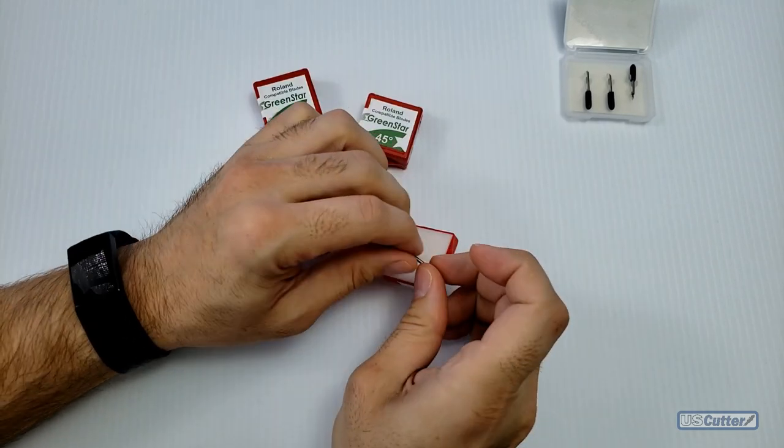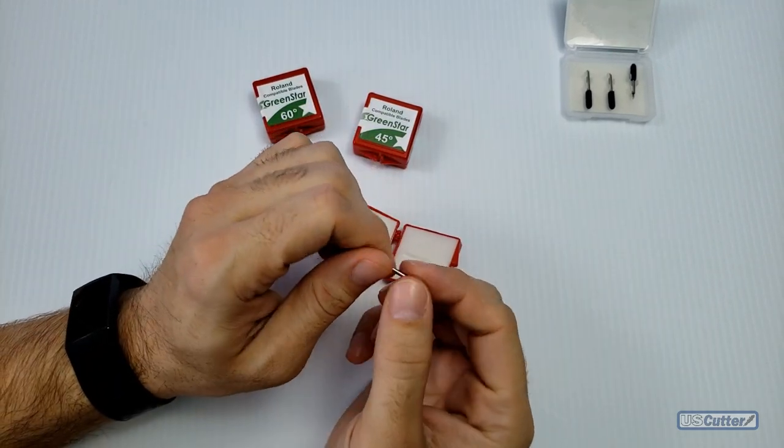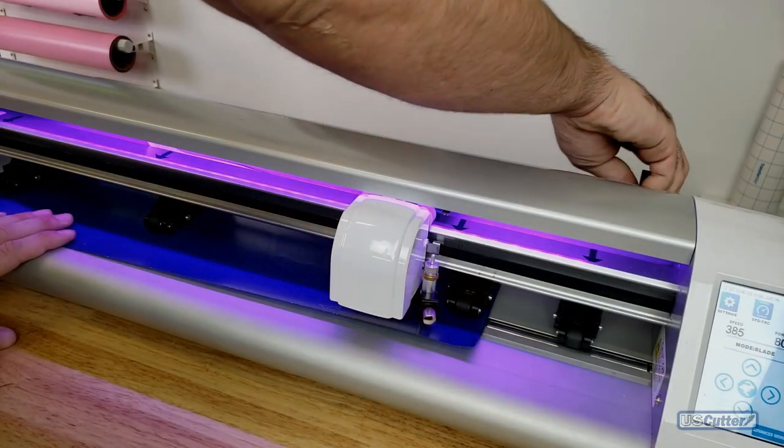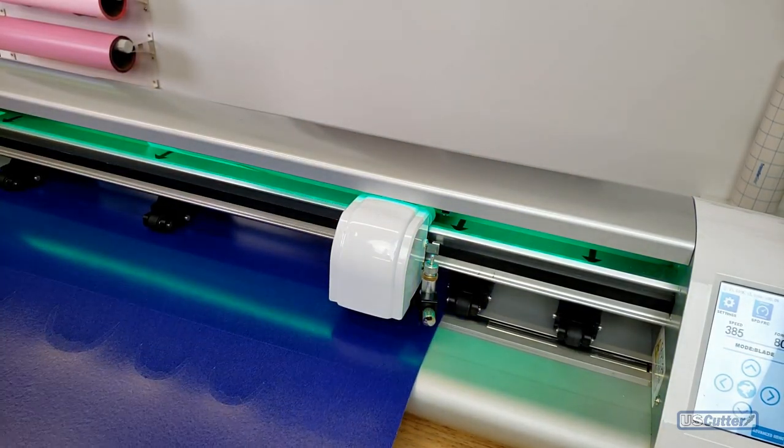But the Clean Cut blades offer specialty blades as well as the 30 degree, 45 degree, and 60 degree blades. Specialty blades are going to be for things like glitter and magnetic sheets.